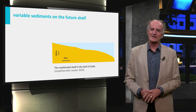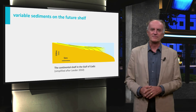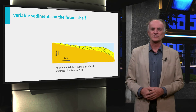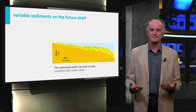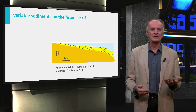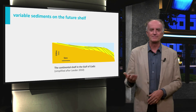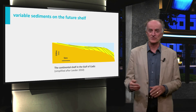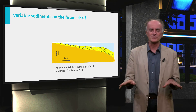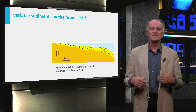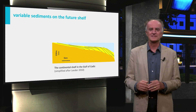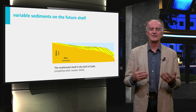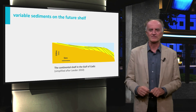Clearly, the area of the future continental shelf was characterized by a remarkable variety of sediments in terms of amount, type, composition and distribution. This has a major impact on the kind of sediments dispersed in the continental shelf.